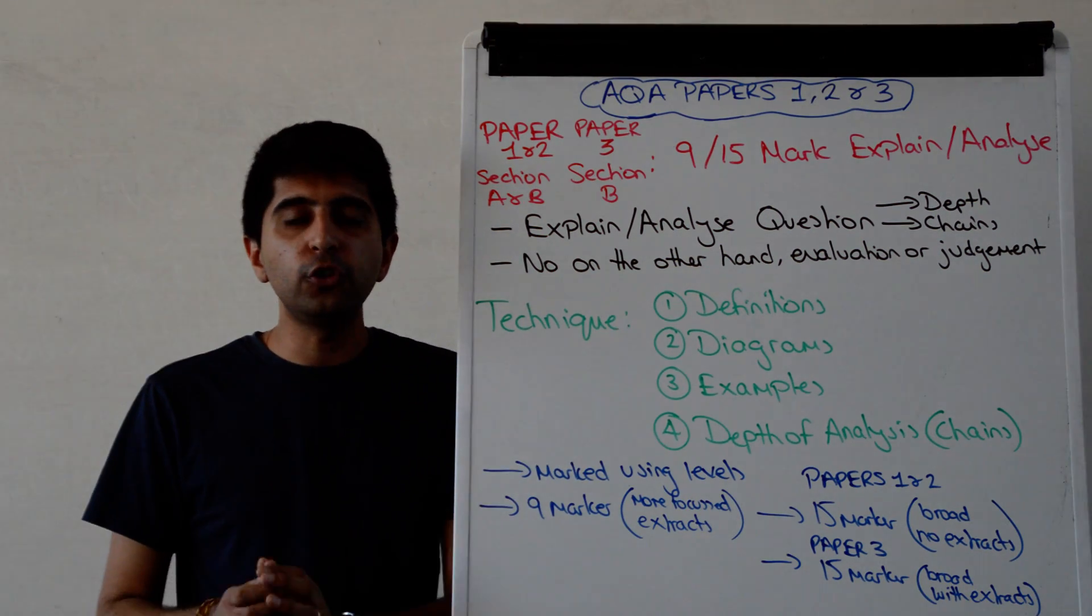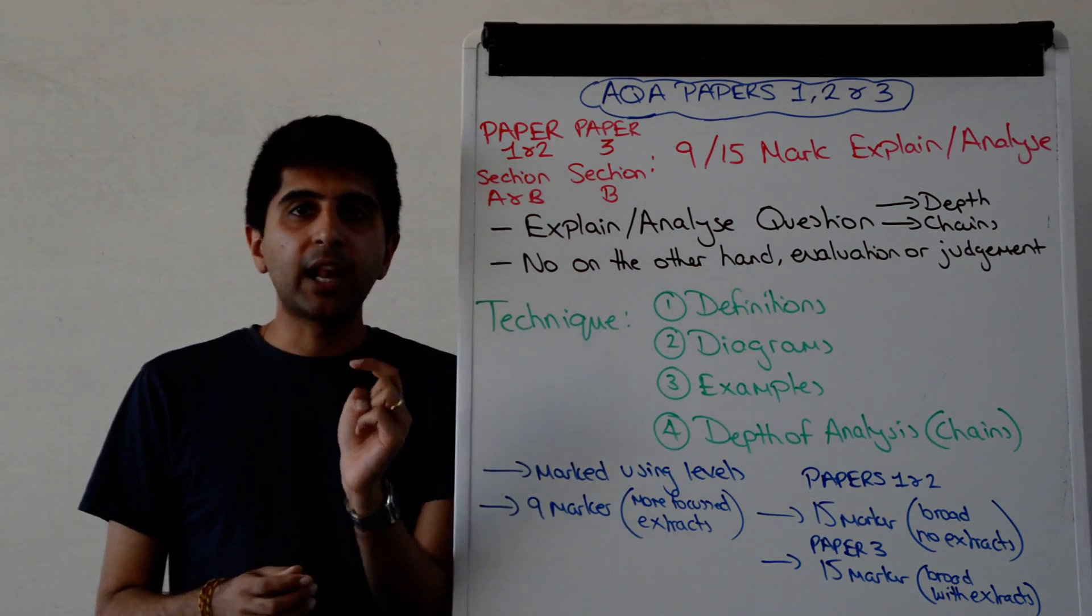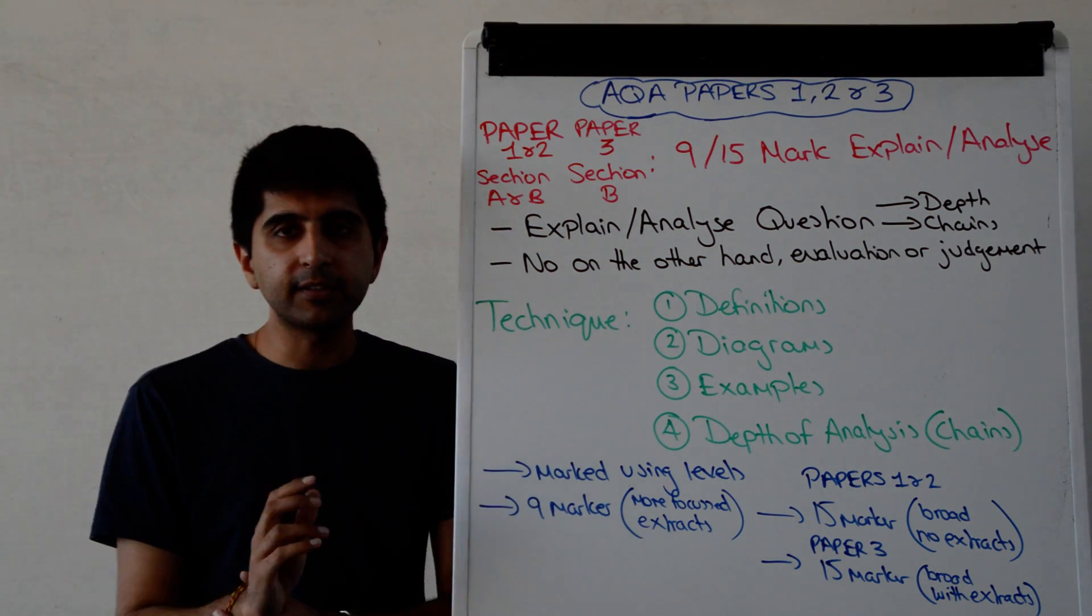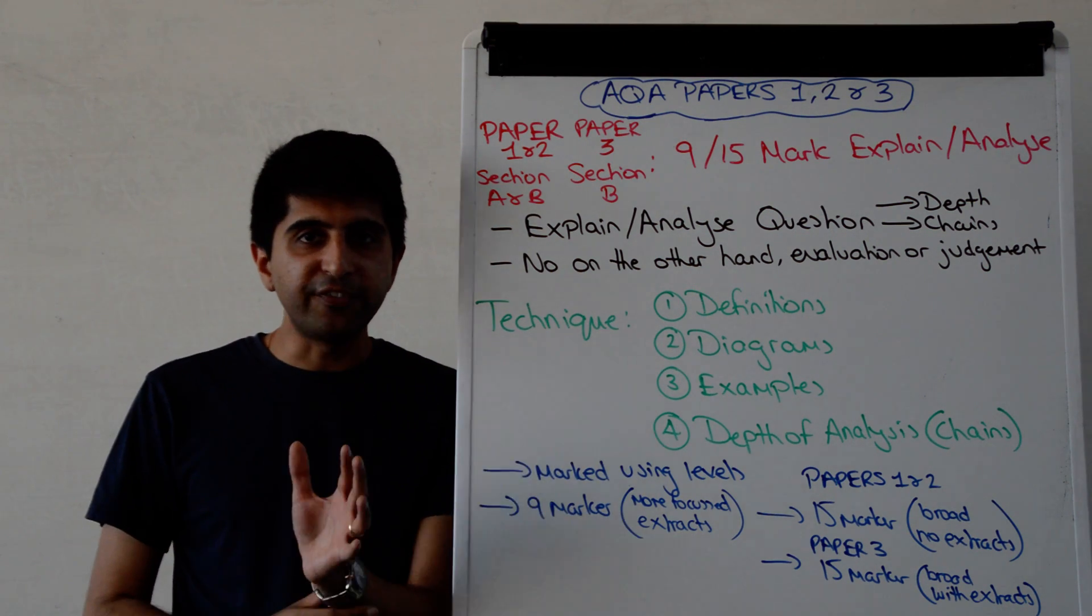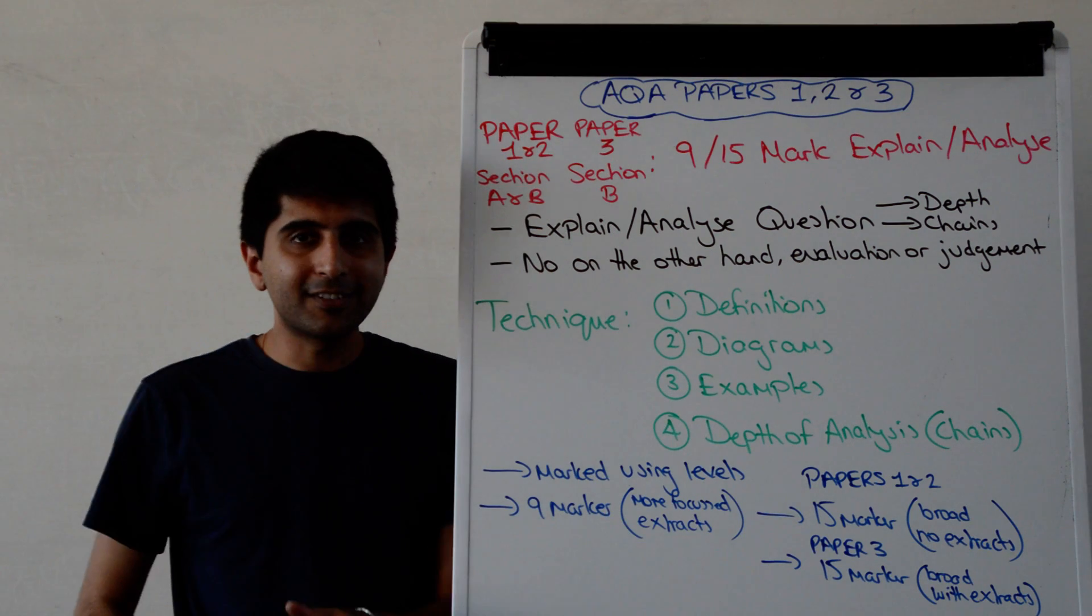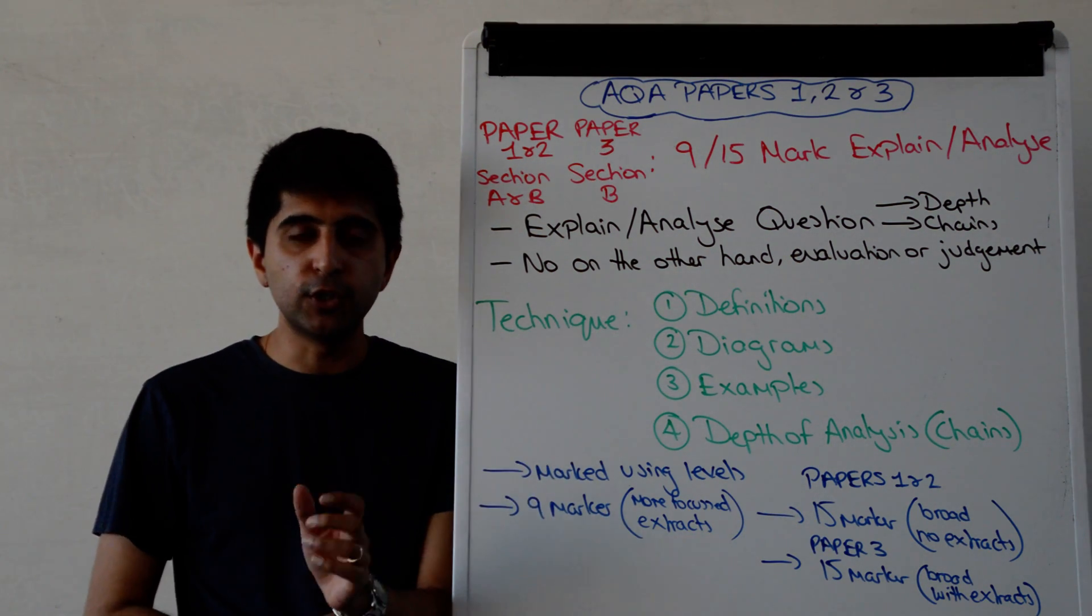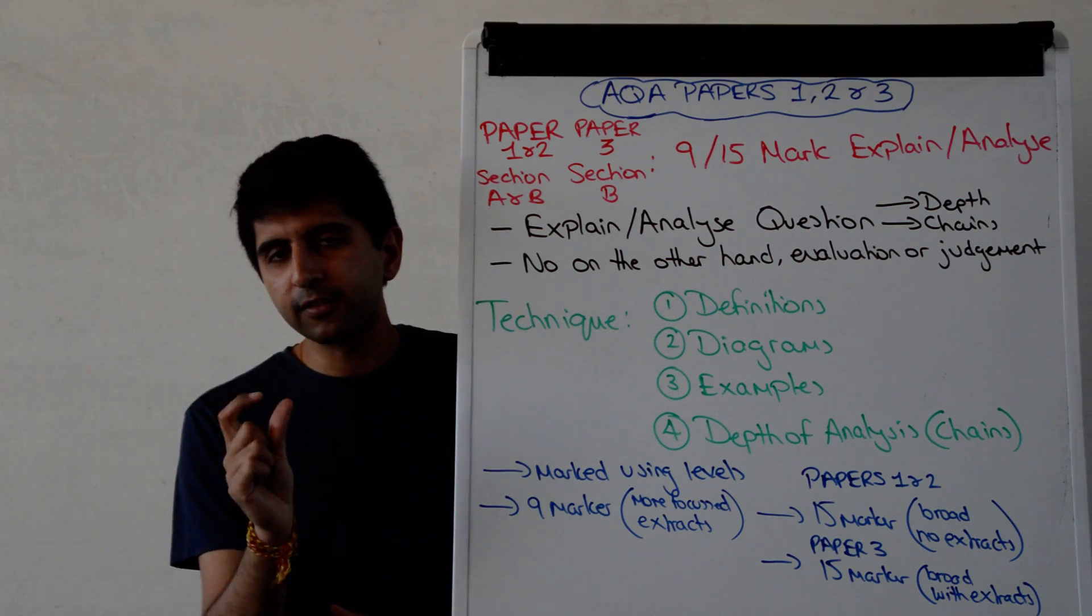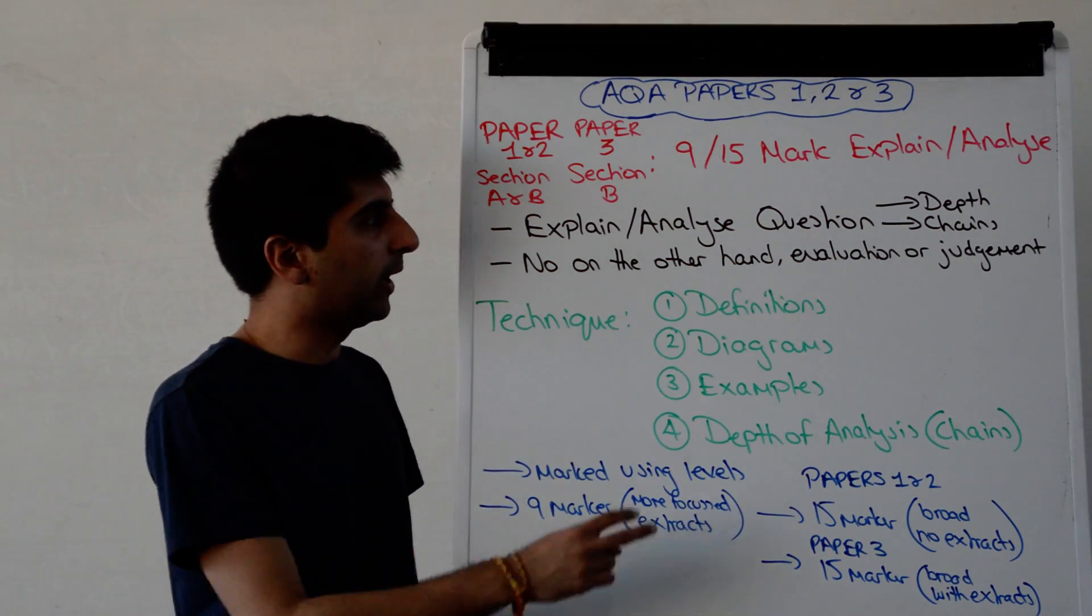In Papers 1 and 2, in Section A, you're going to have a 9 mark question to do in your data response part, that is, based around extracts. And then in Section B, you're going to have a 15 marker to do in the essay section. In Paper 3, in Section B, there is a 15 marker to do. The 15 markers are always the same style of question. The 9 marker is very slightly different, but essentially the same kind of question as well.